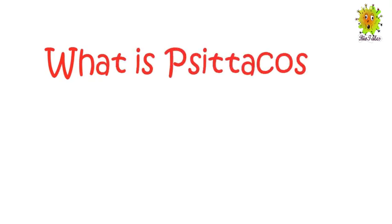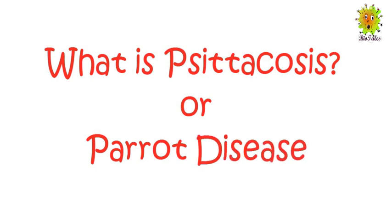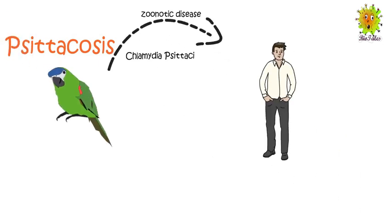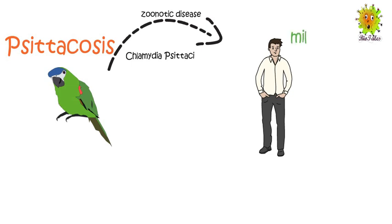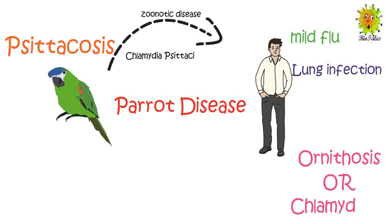Welcome to our new video about a parrot disease called psittacosis. Psittacosis is a type of zoonotic disease caused by the bacterium Chlamydia psittaci. This disease is usually transferred from parrots to humans. In humans, the disease causes mild flu-like symptoms and lung infection. Other names for this disease are parrot disease, ornithosis, and chlamydiosis.